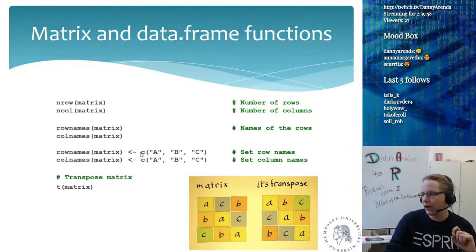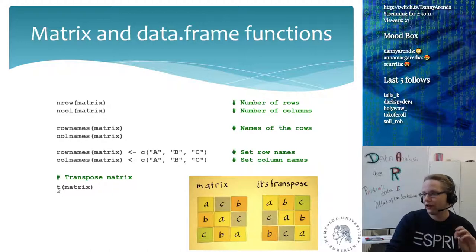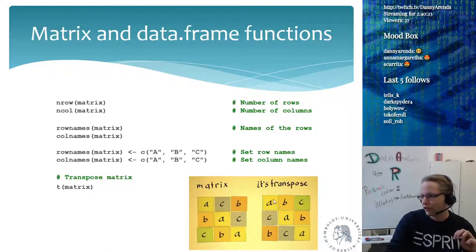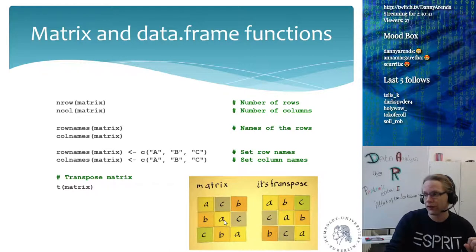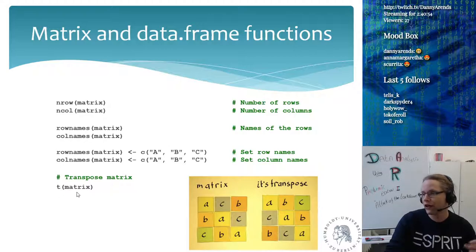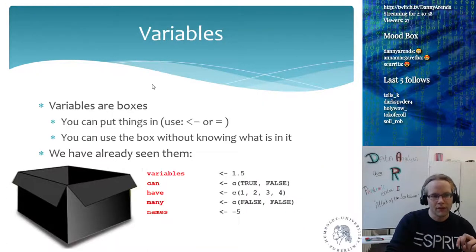The rownames function allows you to assign the required order to row names. When working with matrices and data frames, the t() function comes up often — t stands for transpose, which swaps rows and columns. Row one becomes column one, row two becomes column two, and so on — it puts the matrix on its side. Transposing happens frequently because data is often in the wrong format. For example, the correlation function calculates correlation between columns, but you might want correlation between rows, so you transpose first.